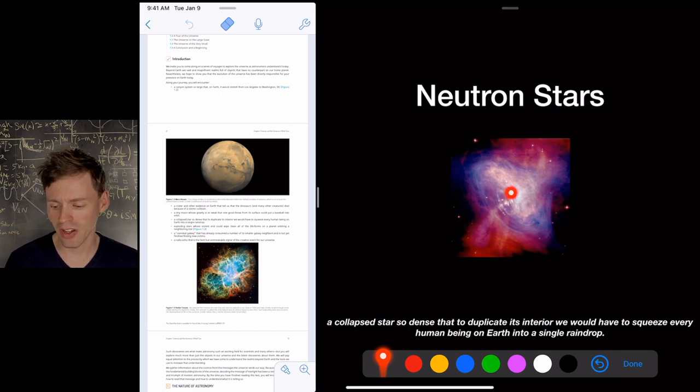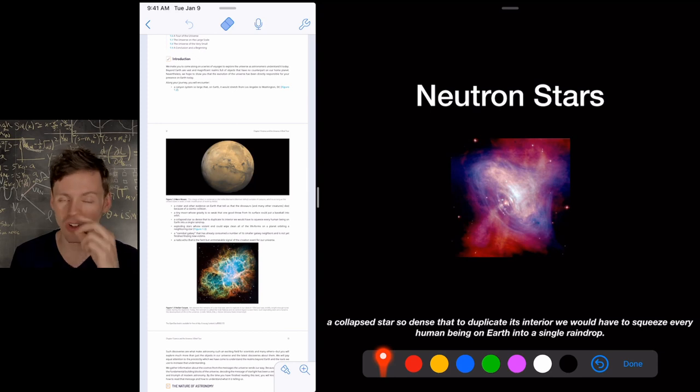Neutron stars. At the center of this pulsar wind nebula, is a neutron star. A neutron star is a collapsed star that is so dense, in order to duplicate its interior, we would have to squeeze every human into a single raindrop. So at the end of a star's life, it could end up as a neutron star, as a black hole, as a white dwarf, all different types. We're going to learn about stars after we learn about the solar system.